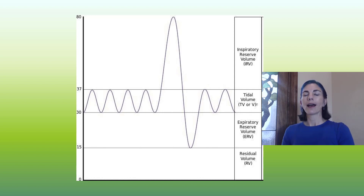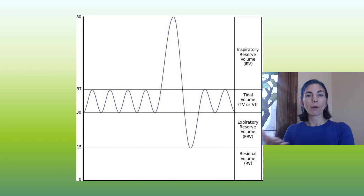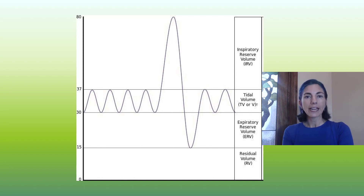Breathing in and out at rest, the air that you move with normal breathing is called tidal volume. The average amount of air that a person moves is roughly around half a liter, or 0.5 liters.